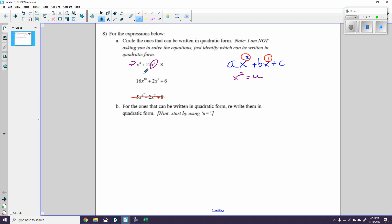Well, once I do that, then I can now rewrite this as u squared, because that would be x squared squared, or x to the fourth, plus 12u minus 8. And there we have the expression, now written in quadratic form.